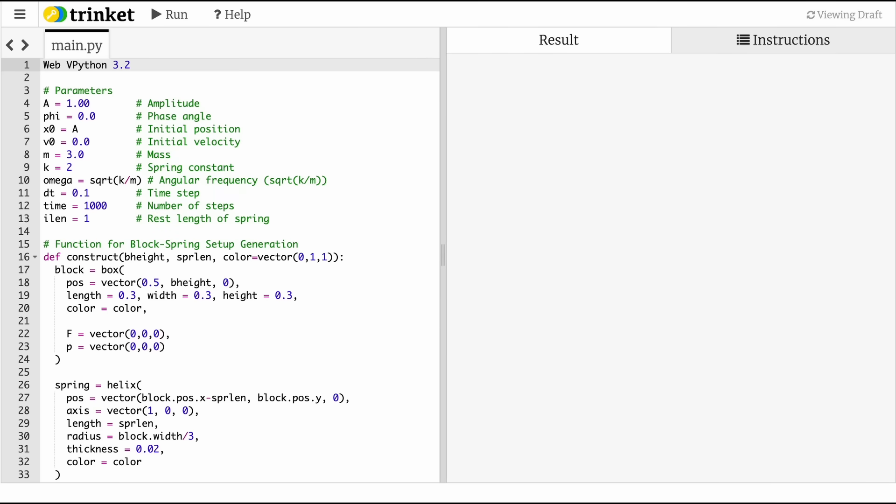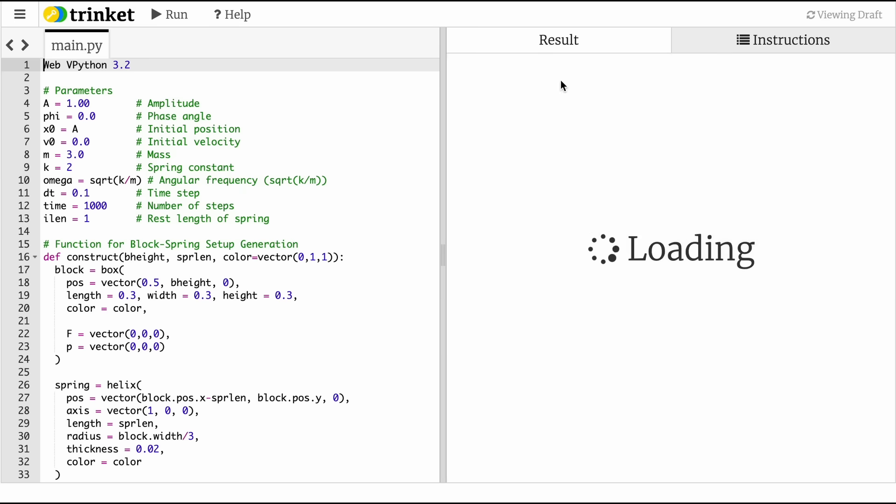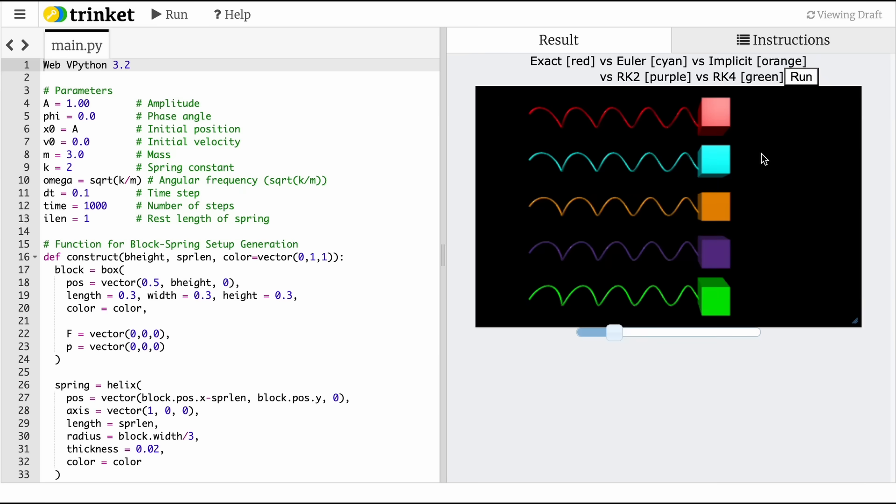Here is the bonus. In addition to the animations that I wrote for this video, I also wrote a web VPython script where you can interact with the different springs and the different approximation methods. So if I click run here, you'll see five springs: this is exact, Euler's method, implicit Euler's method, RK2, and RK4 methods.